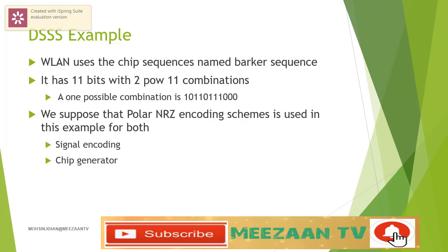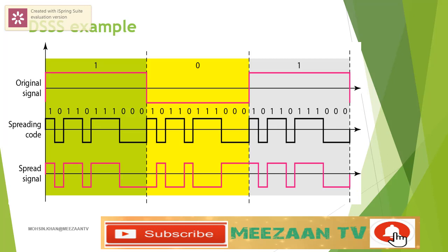We assume that the original signal and the chips in the chip generator use polar NRZ encoding. This figure shows an example of DSSS. The spreading code is 11 chips having the pattern 10110111000. In this case, the data bits are 101. Each data bit is XOR'd with the 11-bit spreading bits, and the resulting spread signal is shown in the last line. We can see from this example that the bandwidth of the spread signal is 11 times larger than the bandwidth of the original signal. The spread signal can provide privacy if the intruder does not know the code.